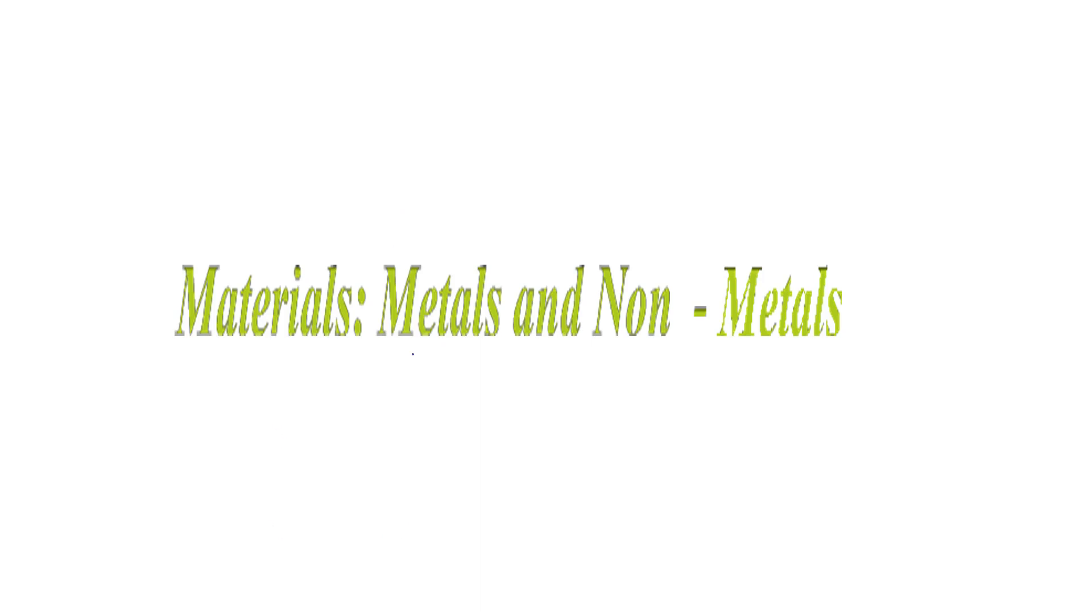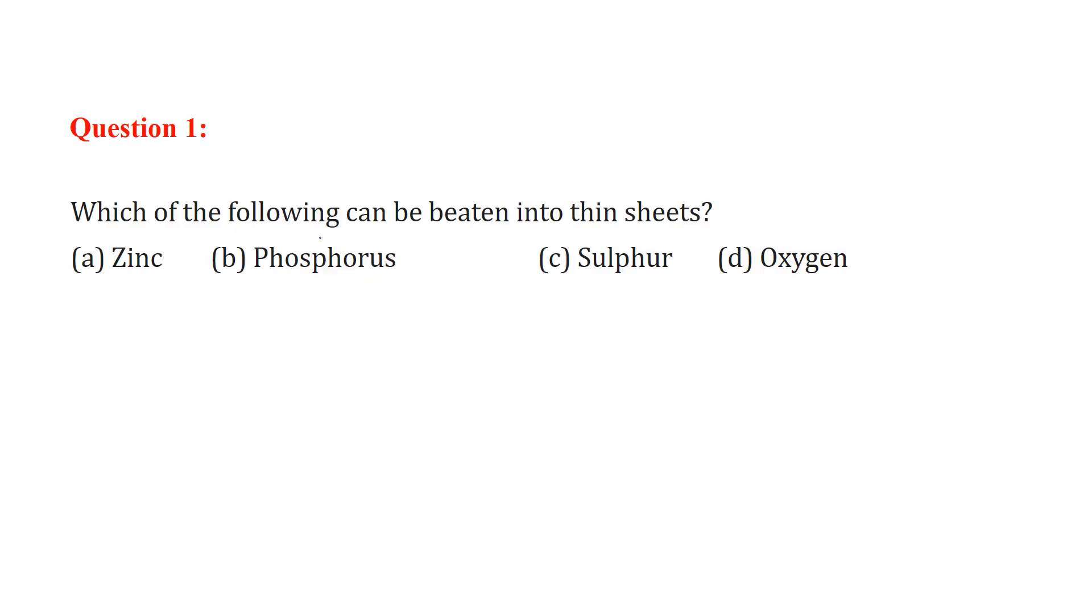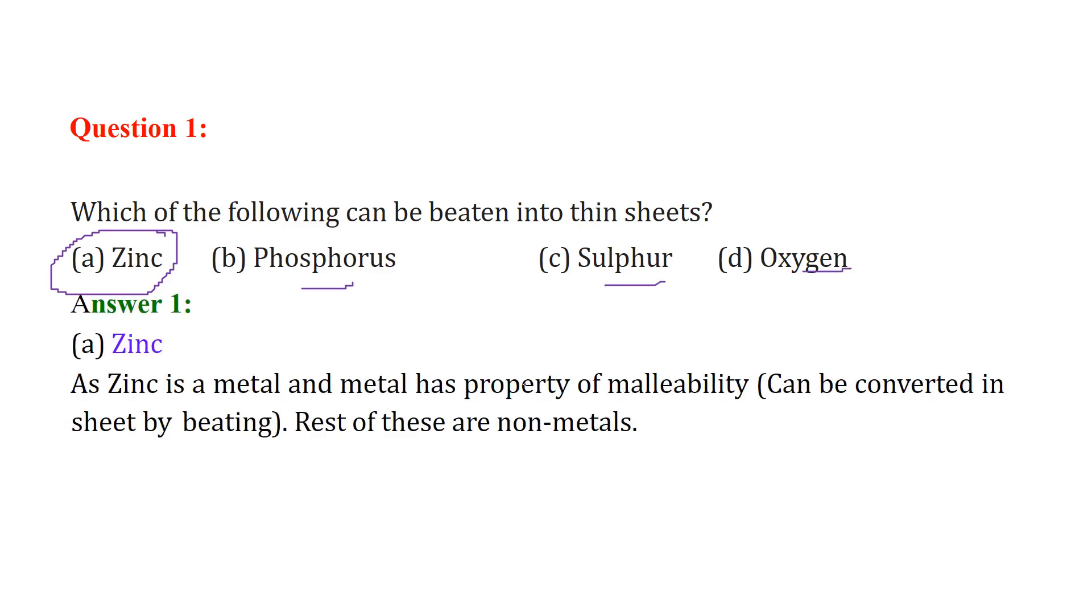We are taking question and answers of metals and non-metals under materials. The first question is which of the following can be beaten into sheets? The answer would be zinc because this is the only metal, others are all non-metals. Zinc is a metal and it has a property called malleability, which means you can convert the metal or element by beating into sheets.